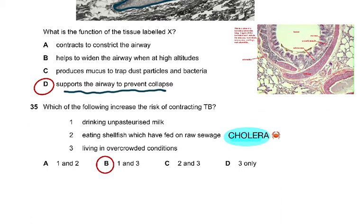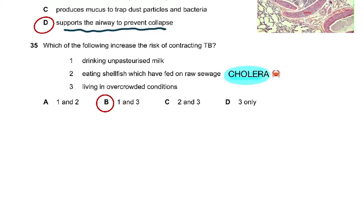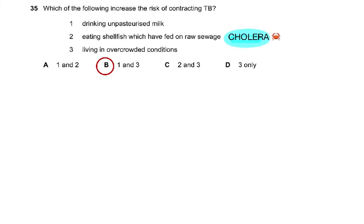Question 35: Which of the following increases the risk of contracting TB? Options include: drinking unpasteurised milk; eating shellfish fed on raw sewage (which results in cholera); and living in overcrowded conditions. TB is an airborne droplet infection. Mycobacterium tuberculosis and Mycobacterium bovis — bovis comes from cattle with tuberculosis, so drinking unpasteurised milk is a risk. Overcrowded conditions increase exposure to droplet infection, which can result in the spread of tuberculosis.